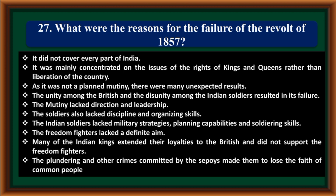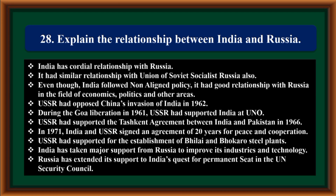Explain the relationship between India and Russia. India has a cordial relationship with Russia and had a similar relationship with the USSR. Even though India followed a non-aligned policy, it had good relations with Russia in economics, politics, and other areas. The USSR opposed China's invasion of India in 1962. During Goa's liberation in 1961, the USSR supported India at the UN. The USSR supported the Tashkent Agreement between India and Pakistan in 1966. In 1971, India and the USSR signed a 20-year agreement for peace and cooperation. The USSR supported the establishment of Bhilai and Bokaro steel plants. Russia has extended support to India's quest for a permanent seat in the UN Security Council.